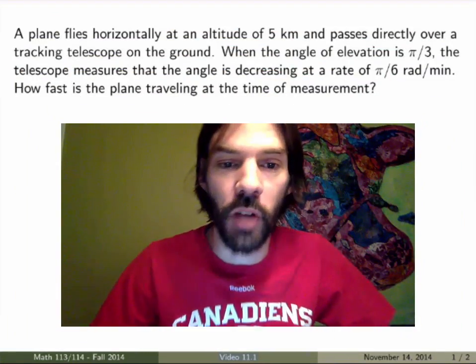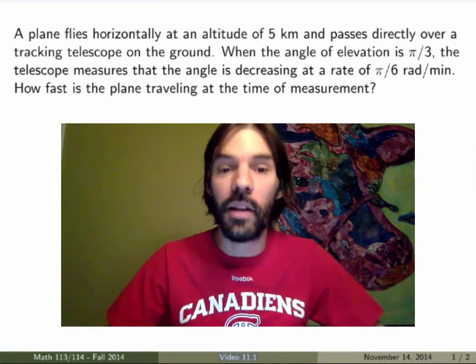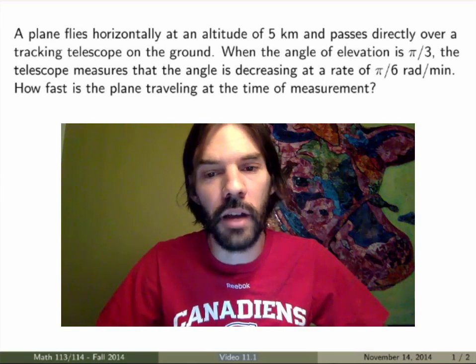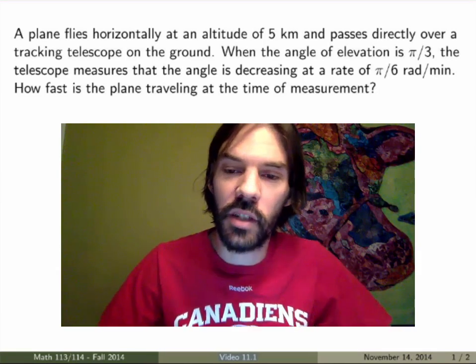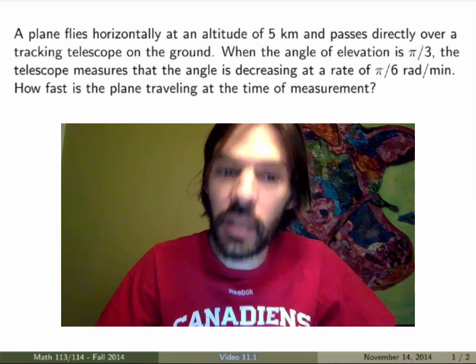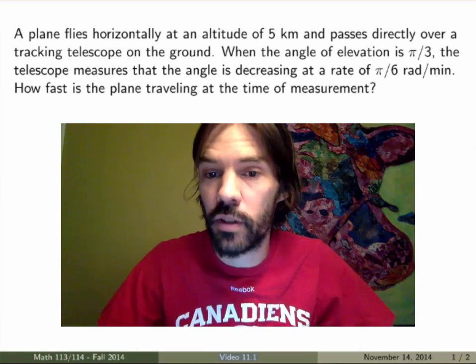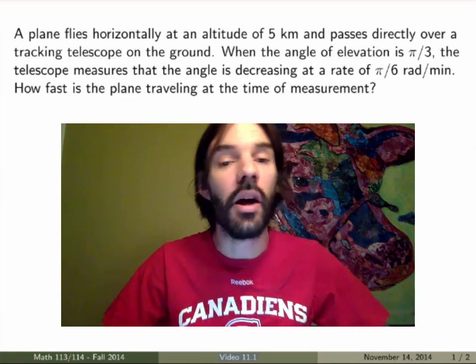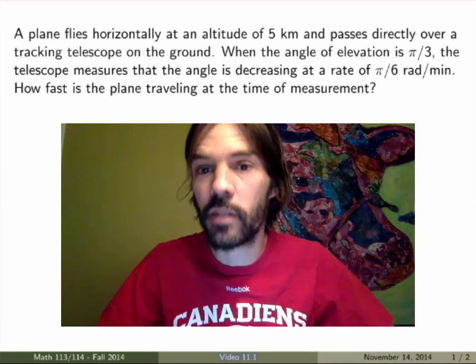Here's a typical problem. Suppose that a plane flies horizontally at an altitude of 5 km and passes directly over a tracking telescope on the ground. When the angle of elevation is pi over 3, the telescope measures that the angle is decreasing at a rate of pi over 6 radians per minute. How fast is the plane travelling at the time of measurement?